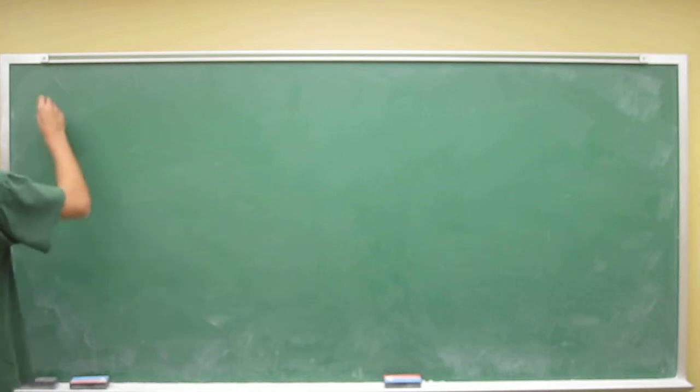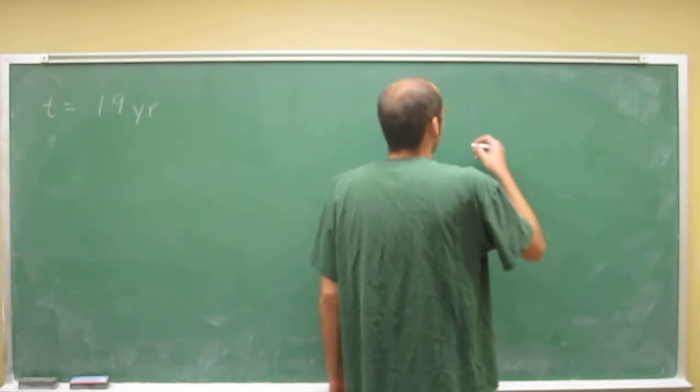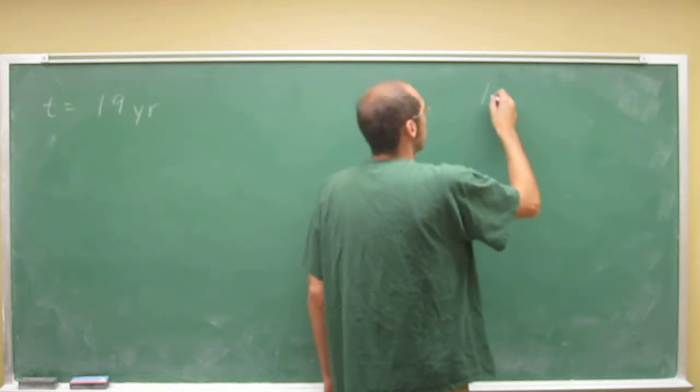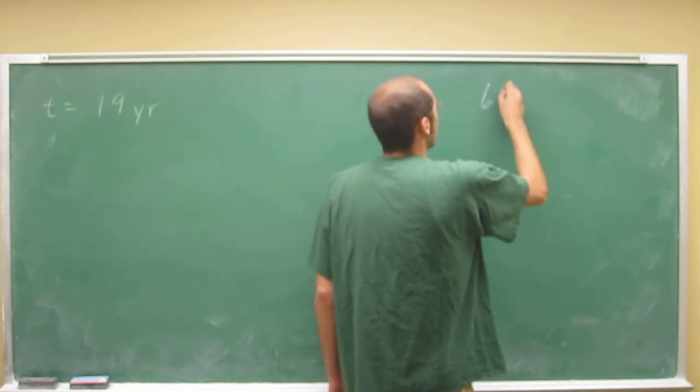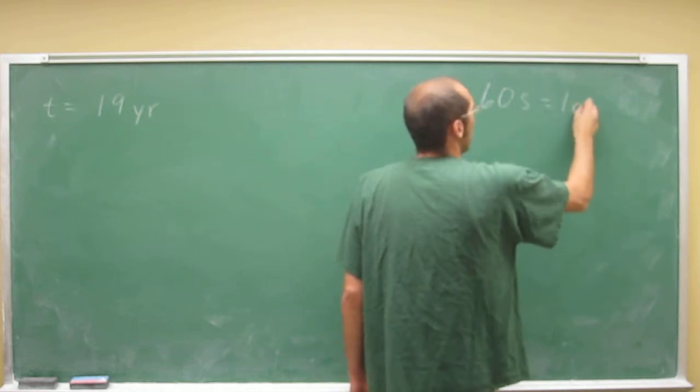So let's start with the seconds part. It gives you 19 years. Remember, you know some conversion factors from years, so you want to go from years to seconds. You know that there are 60 seconds in one minute.